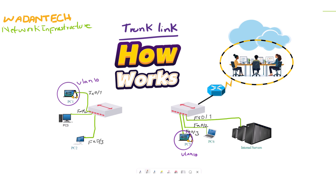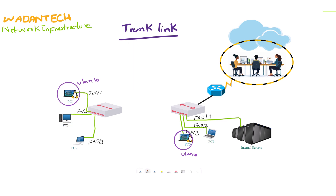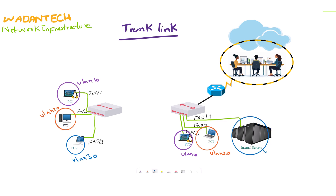In the following network infrastructure we have three VLANs: VLAN 10, 20, and 30. The devices connected on both switches are in different VLANs. Now if we would like to create a connection between VLAN 10 devices that are connected on two different switches, we should connect both switches with a link and assign that link to VLAN 10. Thereafter, VLAN 10 devices are able to send and receive data.